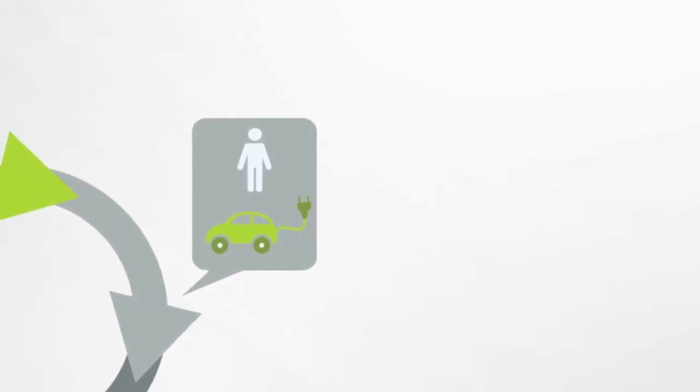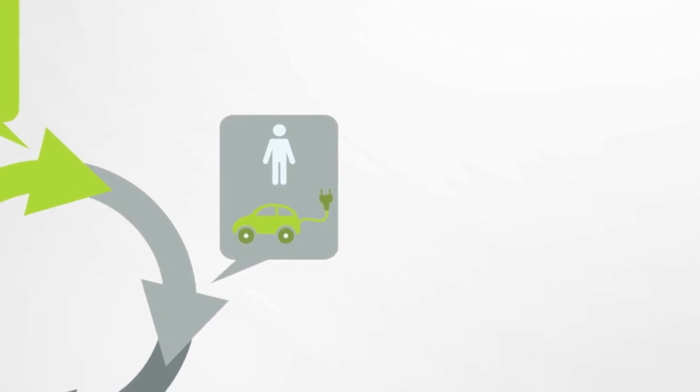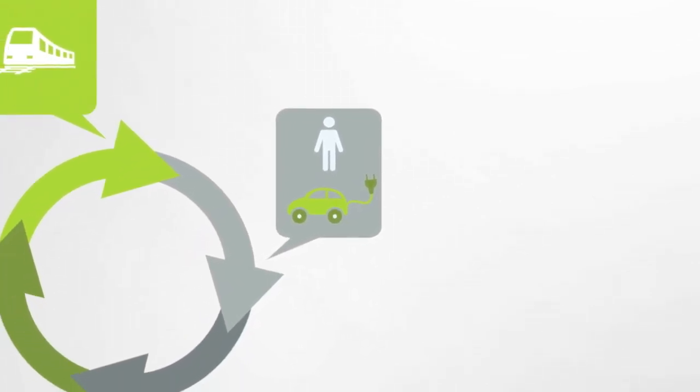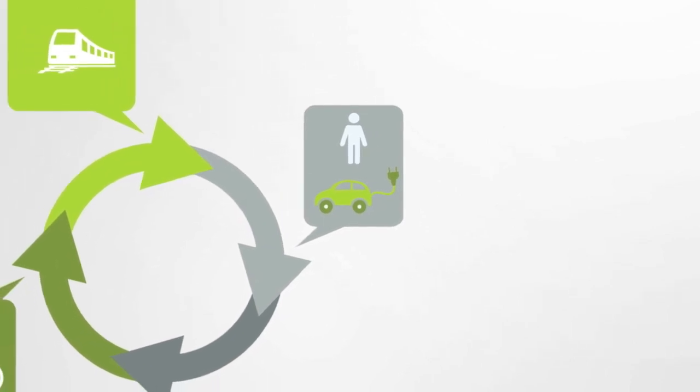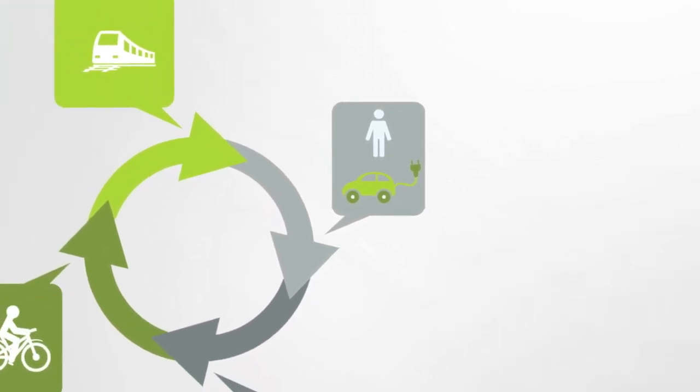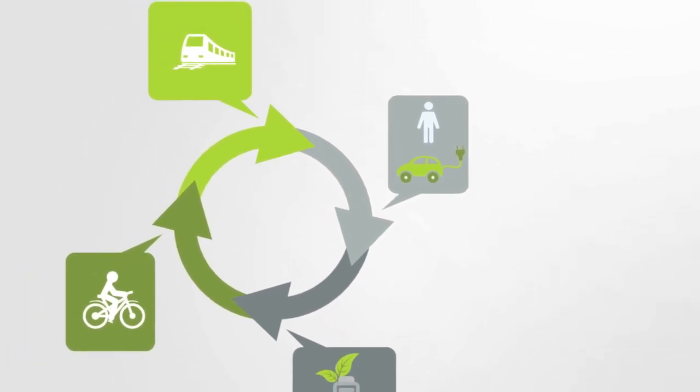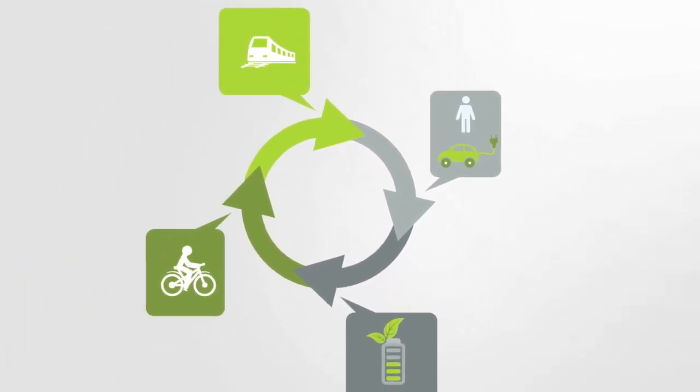Now if we applied systems thinking to this problem, we would start by identifying the car's function, that is, personal transportation, and the system it is a part of, the transportation system. From this perspective, we might not even need to design a new car at all, but end up designing some service that connects pre-existing resources to provide the same desired functionality.